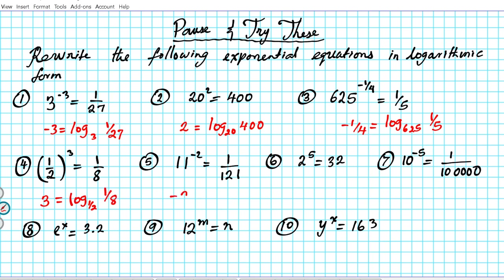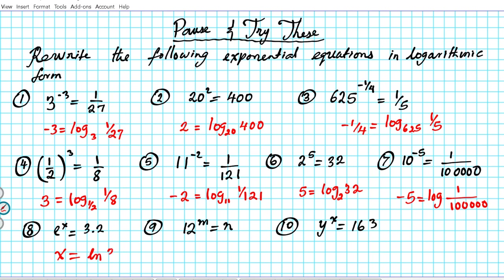Number 5: negative 2 = log base 11 of (1/121). Number 6: 5 = log base 2 of 32. Number 7: negative 5 = log(1/100,000) — the common log. Number 8: x = ln(3.2) — the natural log. Number 9: m = log base 12 of n. Number 10: x = log base y of 163.